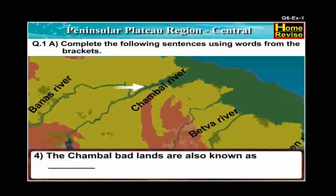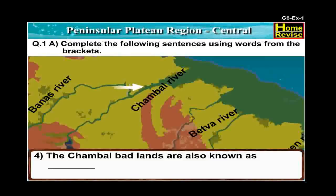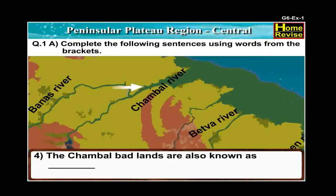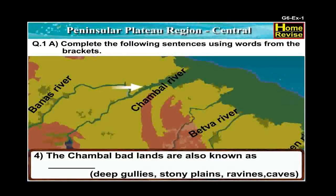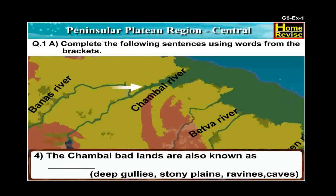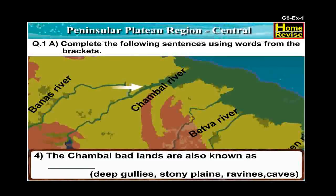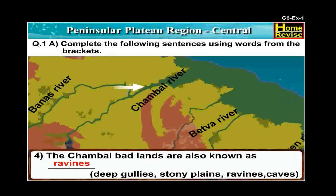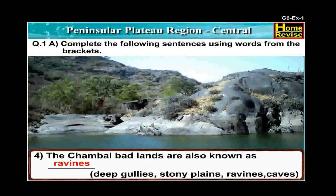Number 4: The Chambal Badlands are also known as dash. The options are deep gullies, stony plains, ravines and caves. The answer is: The Chambal Badlands are also known as ravines.